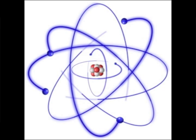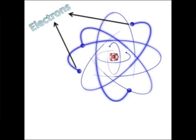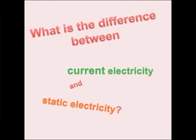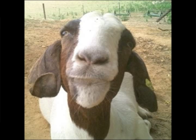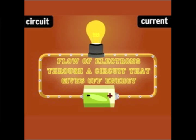An atom is the smallest part of all matter. Its three major parts include the proton, neutron, and electron. Number two: what is the difference between current electricity and static electricity? Static electricity is when electrons gather on an object rather than flow, and current electricity is the flow of electrons through a circuit.